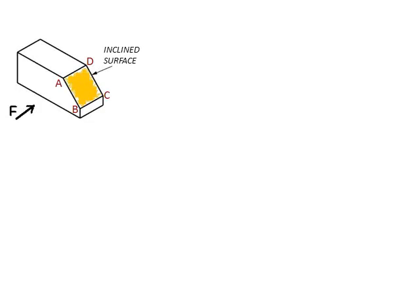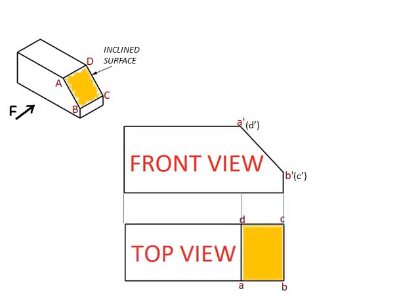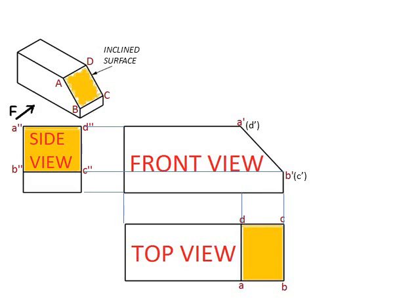Let us understand this with the help of a simple demonstration. The object shown in the figure has an inclined surface A B C D. First, I am going to draw the front view as seen in the direction of the arrow F. Next, the top view — that is, the view obtained by looking from above — is drawn.